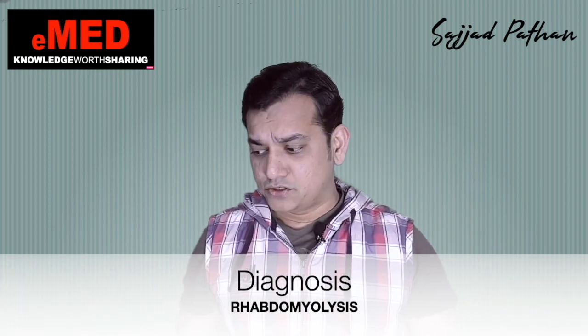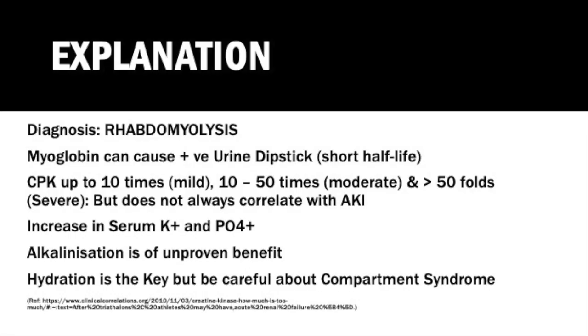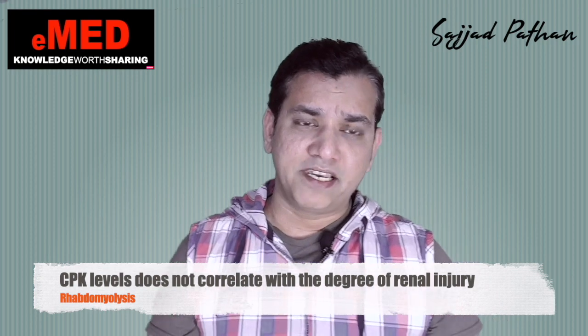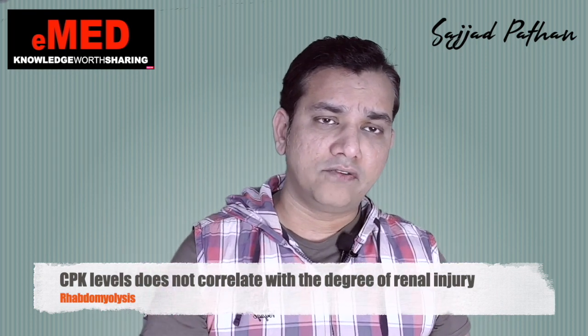The diagnosis is rhabdomyolysis. Myoglobin in urine can show a urine dipstick positive for blood, but under the microscope there will be hardly any red blood cells. Rhabdomyolysis is classified as mild, moderate, and severe based on CPK (creatinine phosphokinase) levels: raised 10 times normal is mild; 10–50 times is moderate; more than 50 times is severe. Importantly, an elevated CPK level does not correlate with the extent of kidney injury.